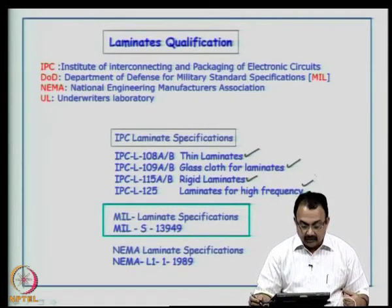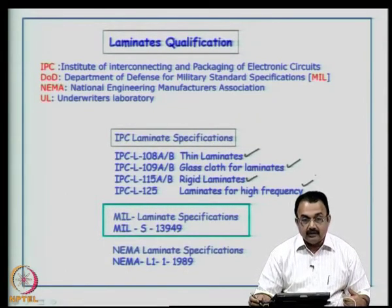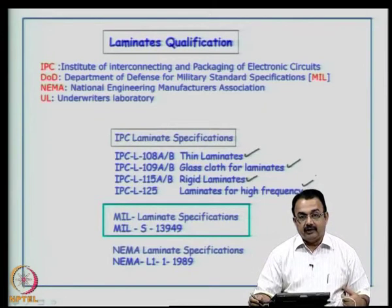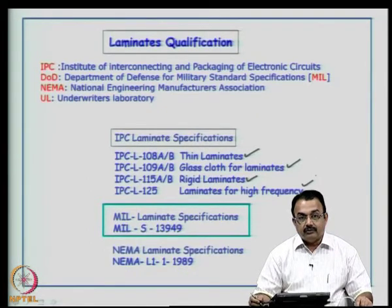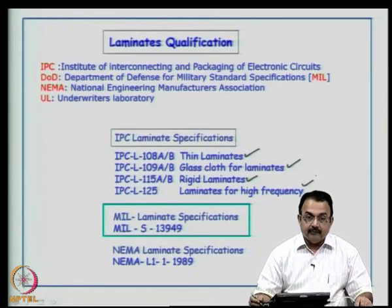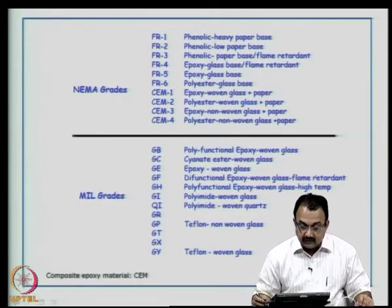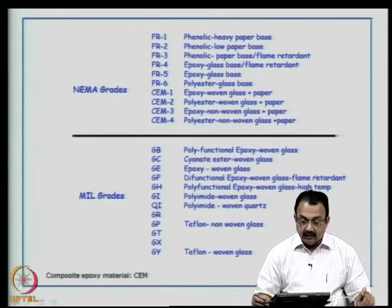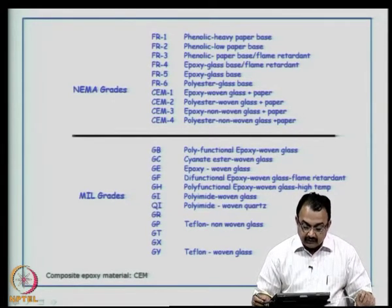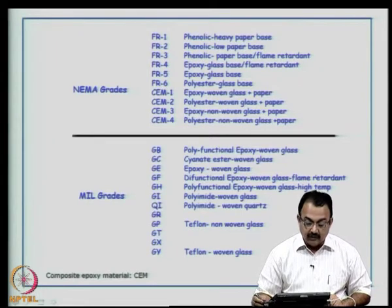Mil-specification MIL-S-13949 is very common, and the NEMA standard pertaining to laminates is from 1989. It is better to be aware of these qualifications — if you are doing research or building a product using laminates, you need to be aware of qualification procedures and certifications, and you need to buy certified laminates. NEMA grades are commonly known as FR1, FR2, FR3, FR4, FR5, and FR6.